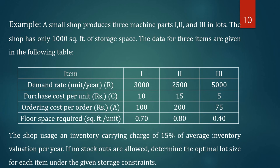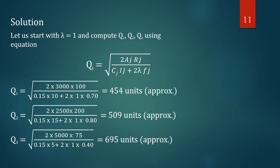We want to find Q1, Q2, and Q3 — the optimum procurement quantities for machine parts 1, 2, and 3 — subject to using only 1000 square feet of floor space. We start with λ = 1 and compute Q1, Q2, Q3 using the formula Qj = sqrt(2·Aj·Rj / (Cj·Ij + 2·λ·fj)), substituting the values of A, R, C, I, and f.